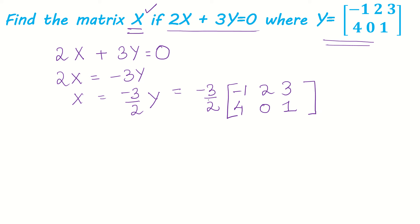So we just have to do scalar multiplication. X will be equal to: minus 1 into minus 3 by 2, 2 into minus 3 by 2, 3 into minus 3 by 2, 4 into minus 3 by 2, 0 into minus 3 by 2 would be 0, and 1 into minus 3 by 2.